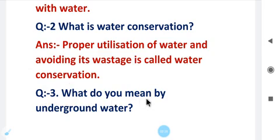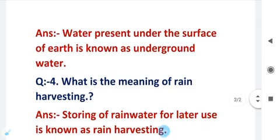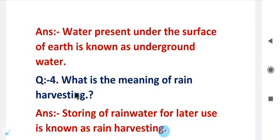Question number three: What do you mean by underground water? Underground water ka meaning kya hota hai? Answer is: Water present under the surface of Earth is known as underground water.